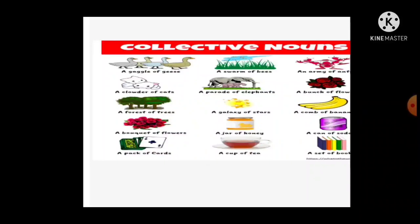Next, we see the collective noun. Collective noun is the name of a group of things. We treat these nouns as singular nouns. Examples: a gaggle of geese, a swarm of bees, an army of ants, a cloud of cats, a parrot of elephants, a bunch of flowers, a bouquet of flowers, a jar of honey, a galaxy of stars, a forest of trees, a pack of cats, a cup of tea, a set of books.